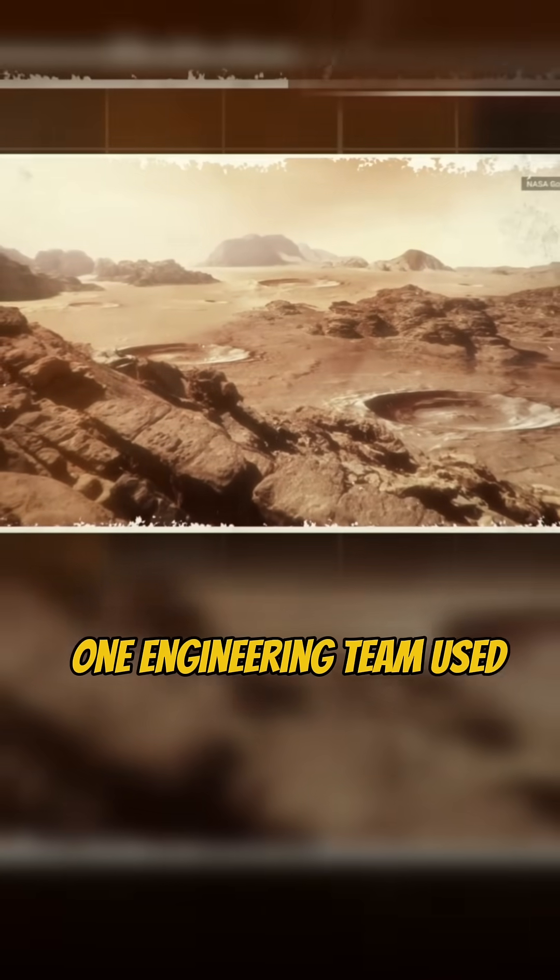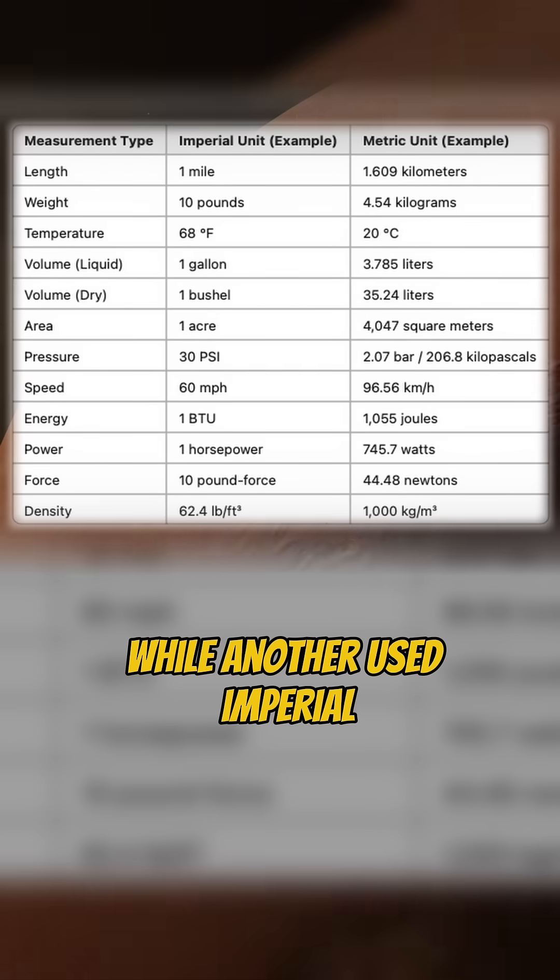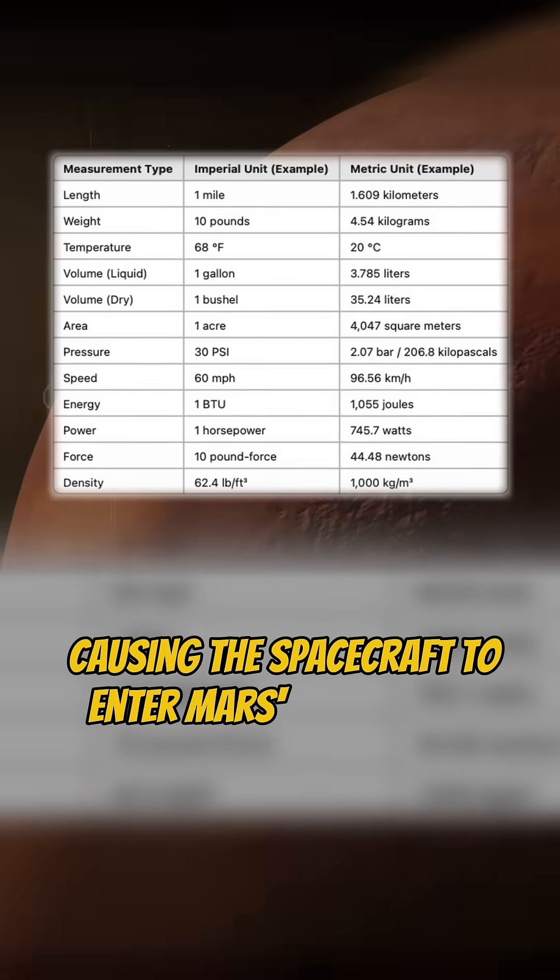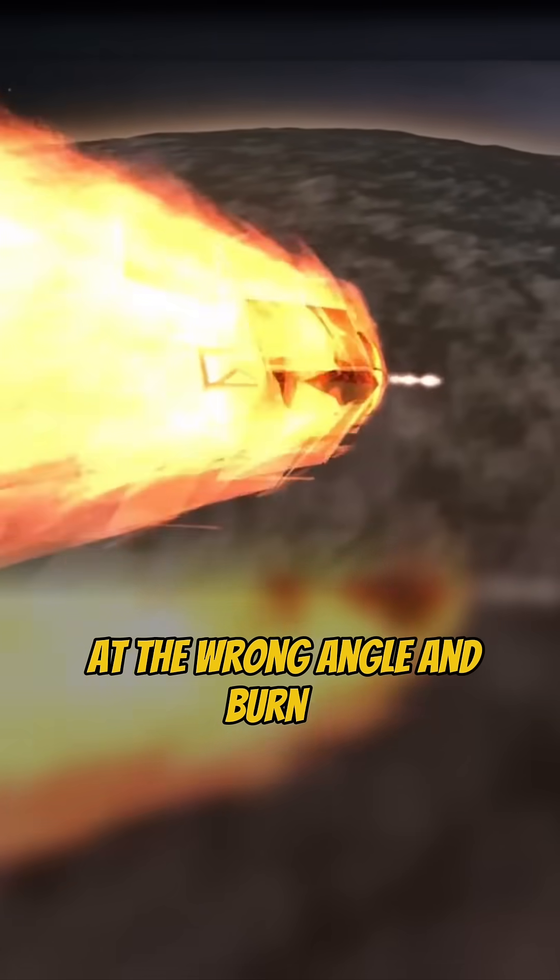One engineering team used metric units while another used imperial, causing the spacecraft to enter Mars' atmosphere at the wrong angle and burn up.